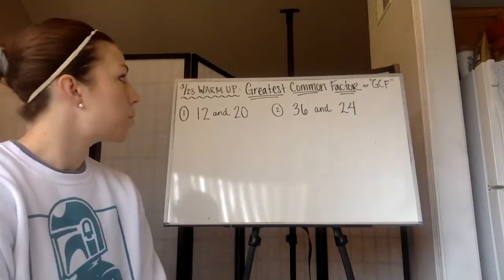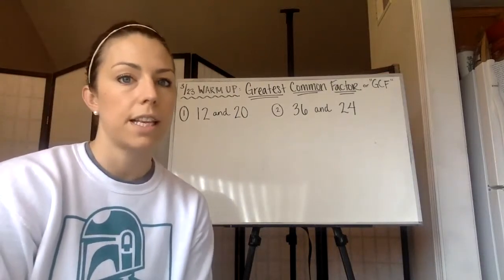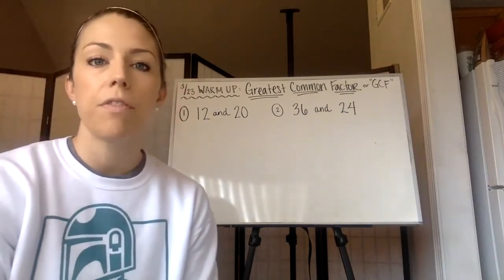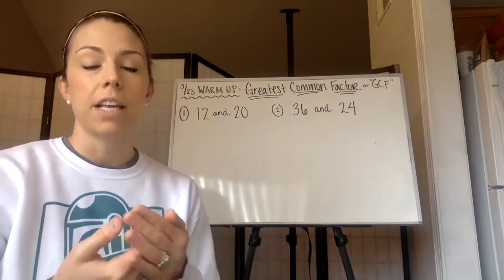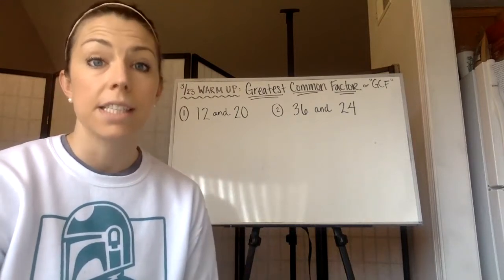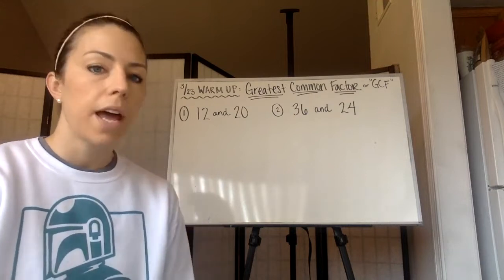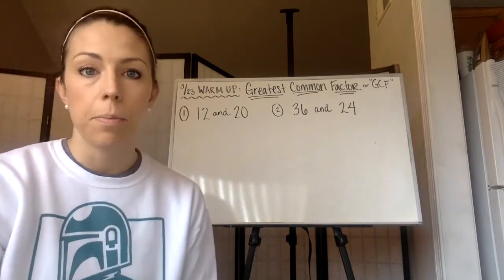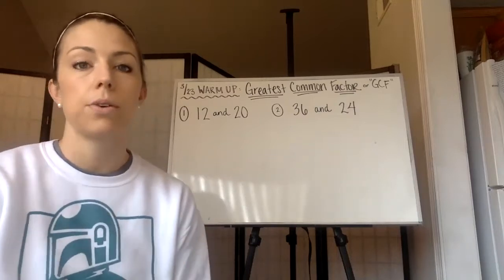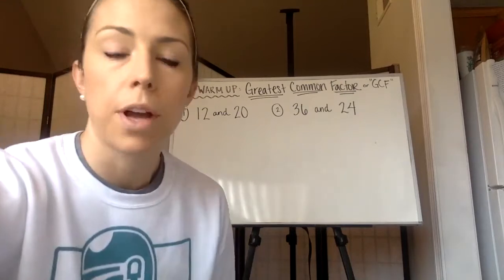On your piece of paper, you're going to be finding the greatest common factor. We haven't done this for a while. Another way of factoring is finding the greatest common factor of two numbers and then writing both of those numbers as individual products. Feel free to pause the video at any time. I'll do number one with you, and then you can pause and try number two on your own.